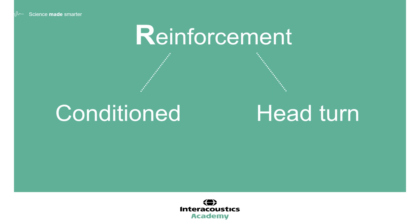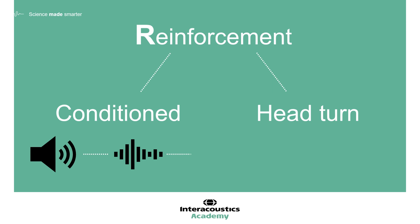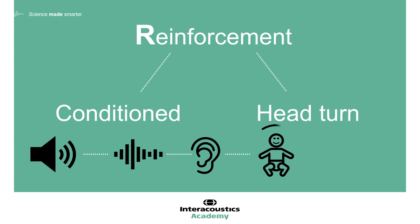Let's take a look at the different stages of a VRA test. Firstly, a transducer such as a loudspeaker is used to present a sound. Then, that sound must reach the ear and be detected by the child. If the sound is detected by the child, they turn their head to seek out the visual reinforcer, which is then made available for them to see.